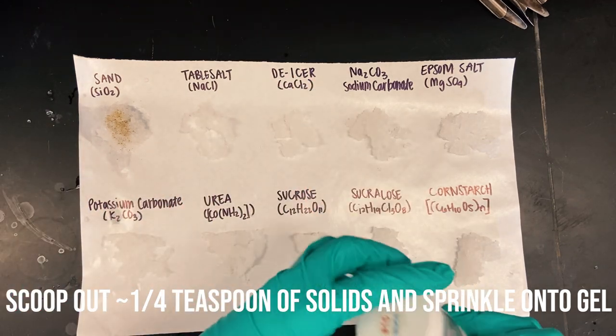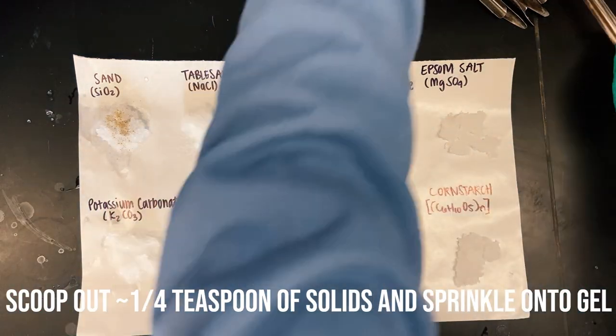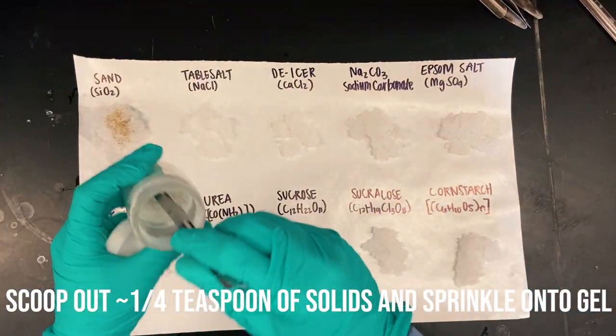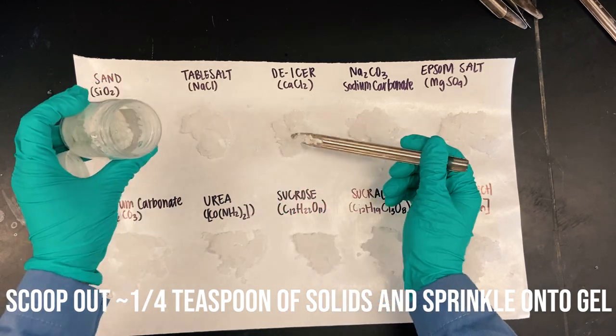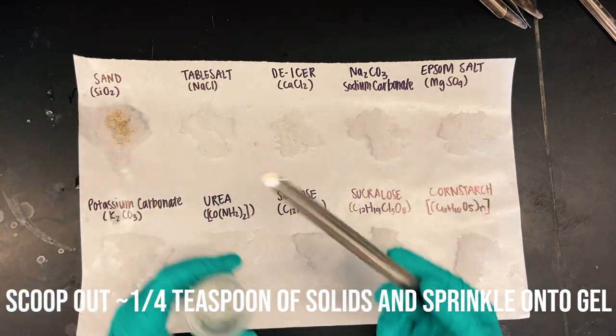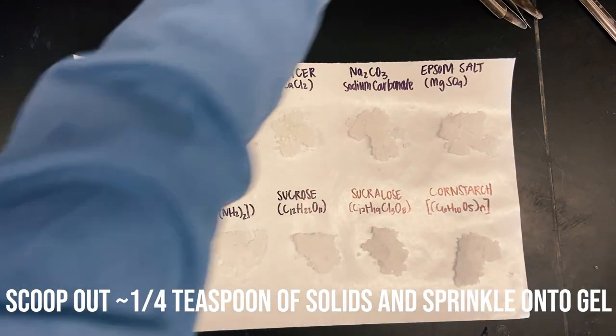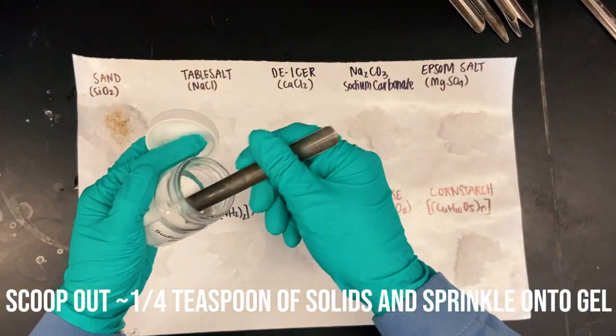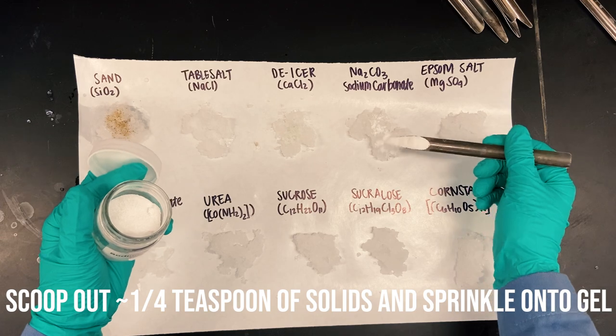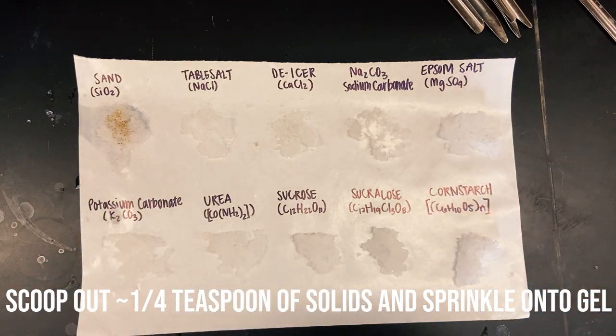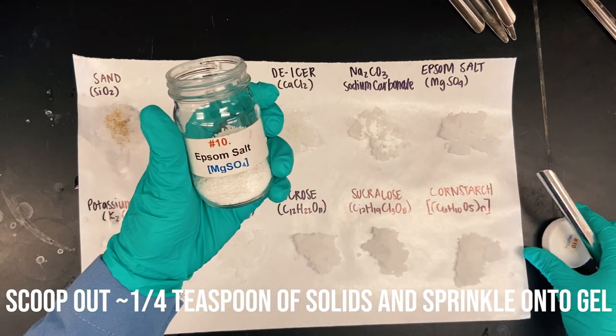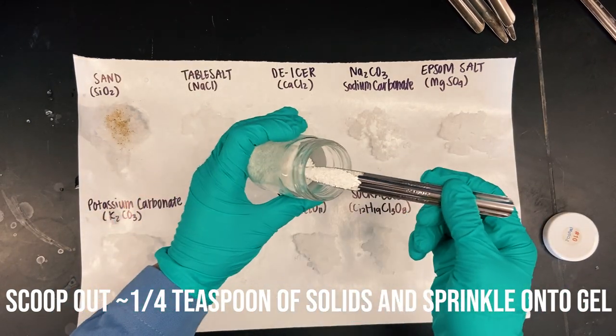And then we've got a common roadway de-icer. This is calcium chloride, or CaCl2. Next is sodium carbonate, Na2CO3, followed by Epsom salt, magnesium sulfate, MgSO4.